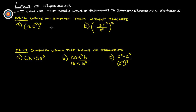Example 16, write in simplest form without brackets. Think of it as negative 2 to the 1st times t to the 3rd. This 5 distributes to both of those, so that's negative 2 to the 5th times t to the 3 times 5, which is t to the 15th.